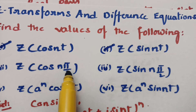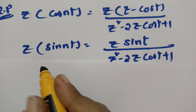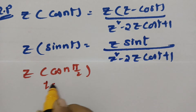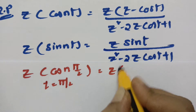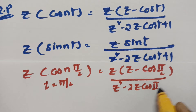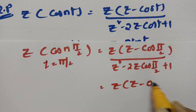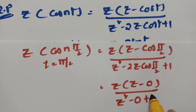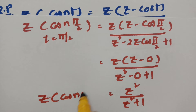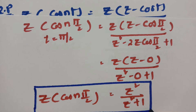Next we need Z of cos(nπ/2) and Z of sin(nπ/2). In place of t, I will substitute π/2. So Z of cos(nπ/2) = Z·(Z − cos(π/2)) / (Z² − 2Z·cos(π/2) + 1). Since cos(π/2) = cos(90°) = 0, this becomes Z·Z / (Z² − 0 + 1) = Z² / (Z² + 1).